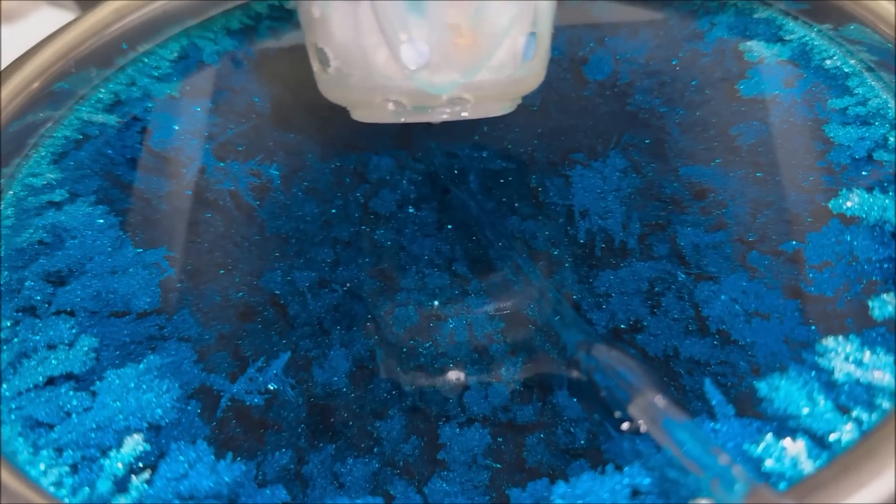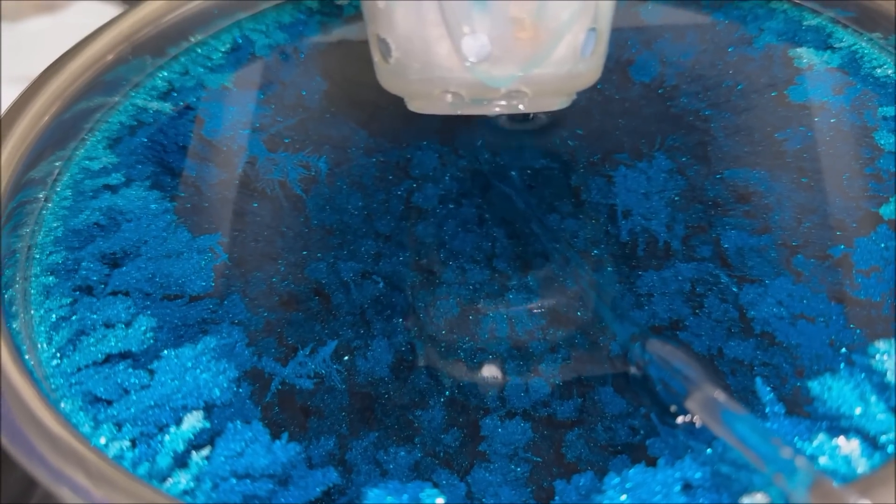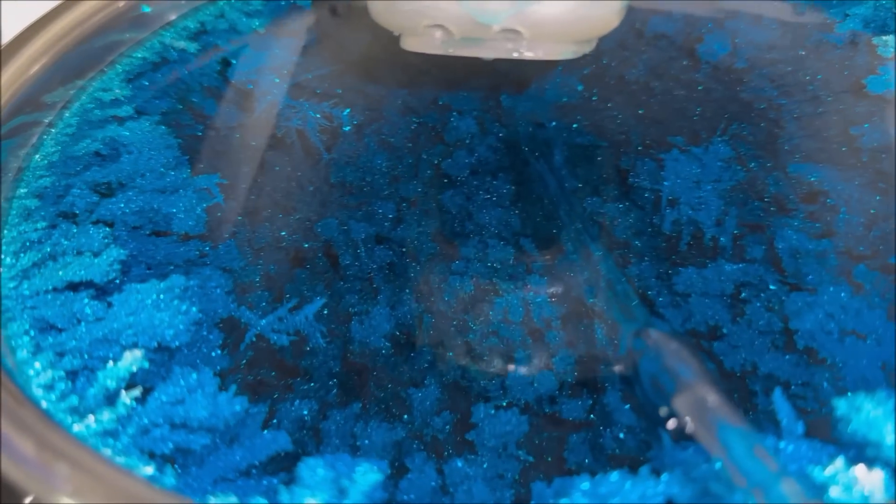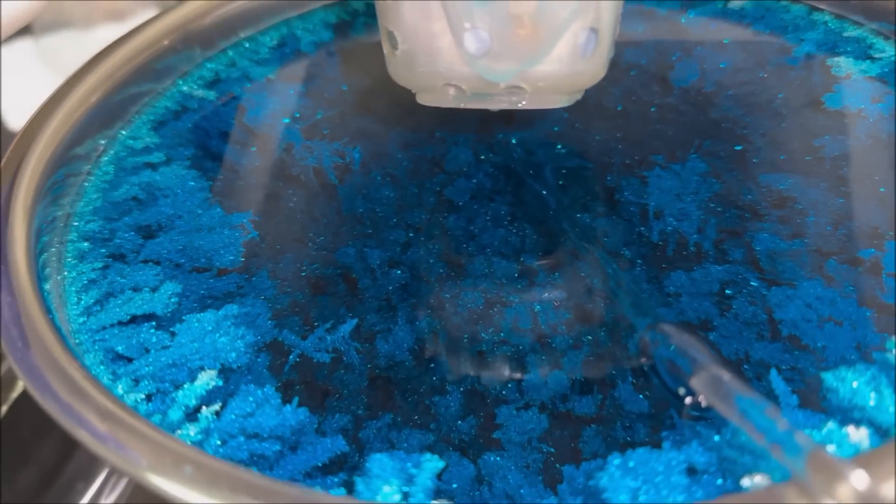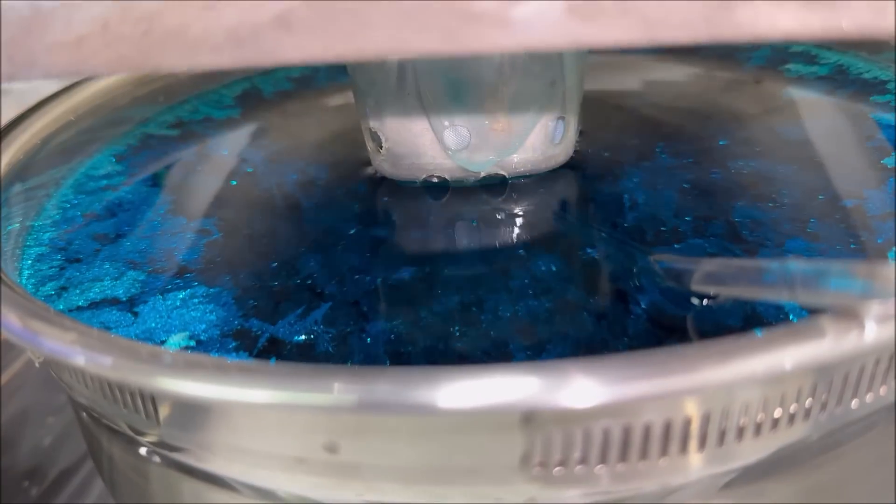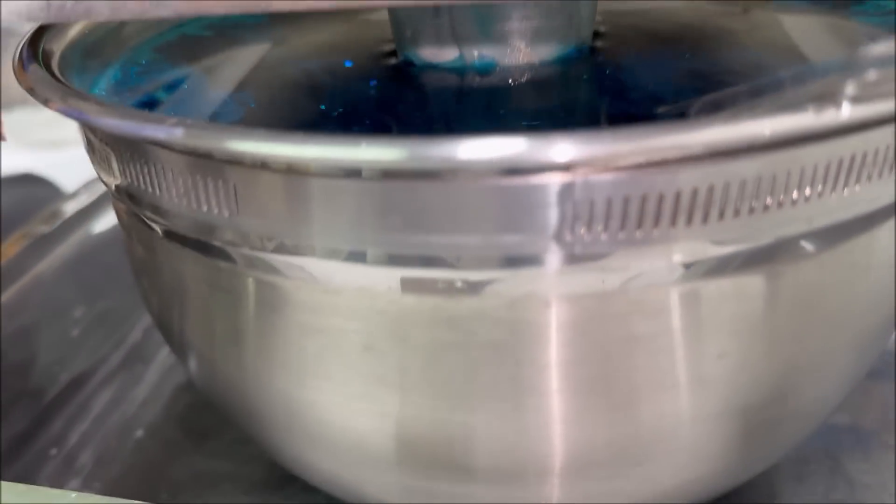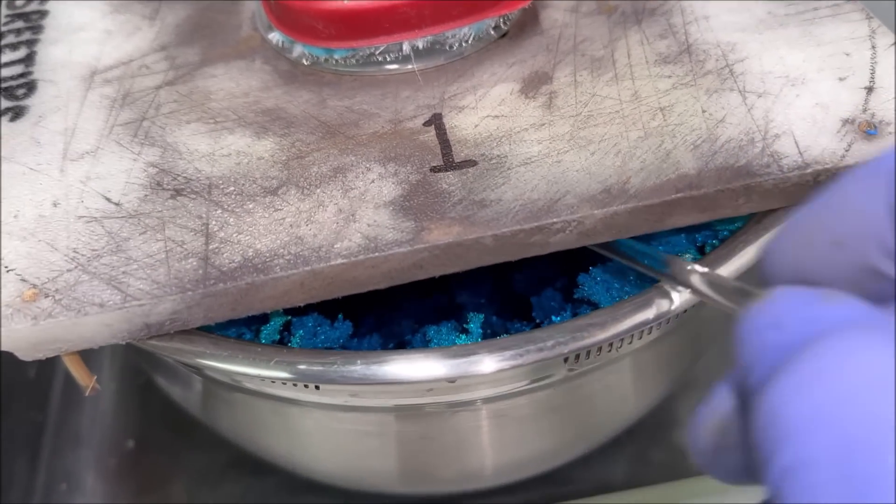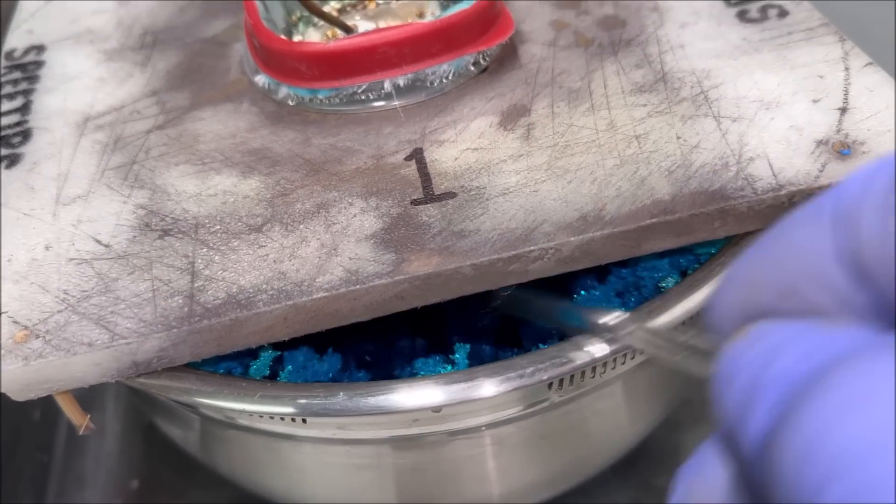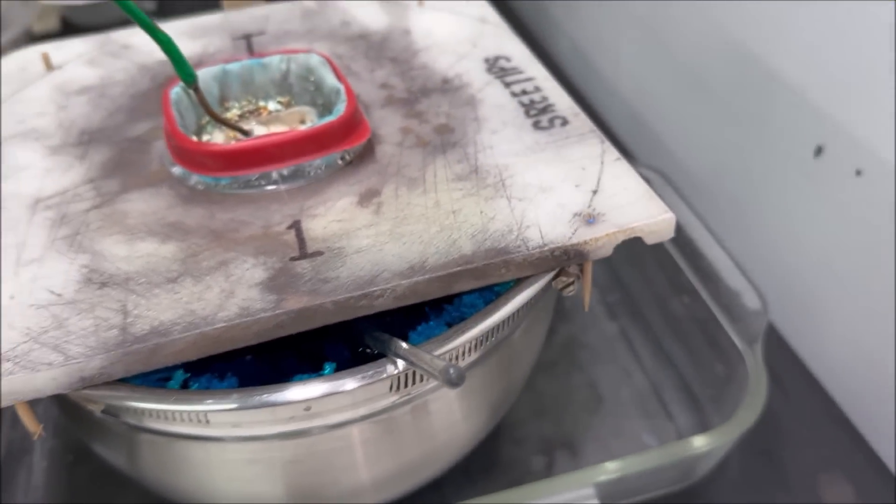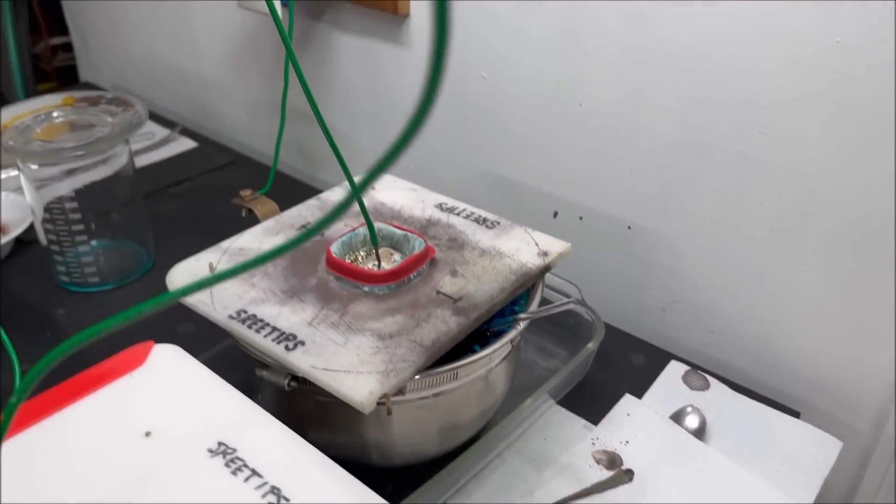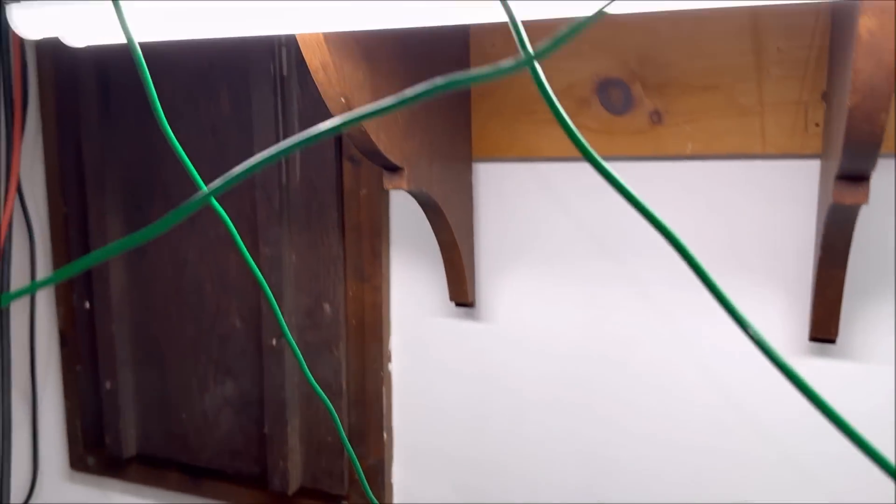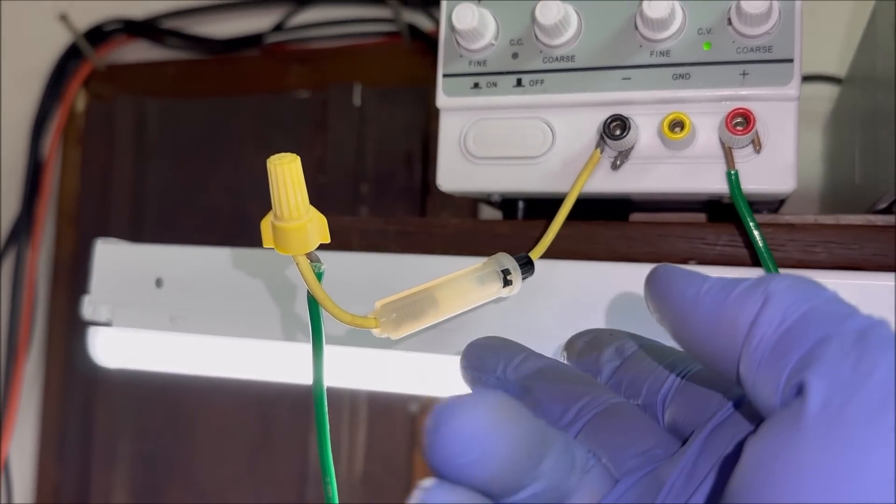If we let it run too long, what will happen is that silver crystal will come in contact with the anode filter basket there and short it out. So we'll probably have to go ahead and harvest this tomorrow. I'm going to try to knock some of those crystals down in there so we can create some room to prevent that from happening.